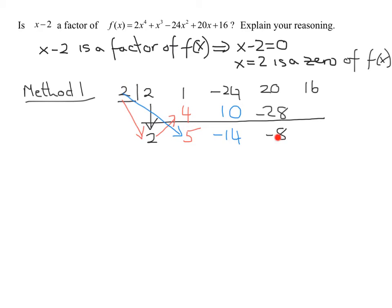Last one, 2 times negative 8 is negative 16 that I'm going to write there. So it's negative 16. The last thing we do is add these two numbers up. And what's 16 minus 16? It is 0. So this is my remainder.